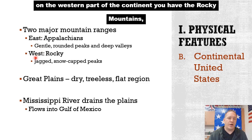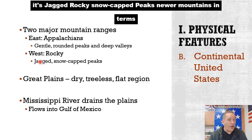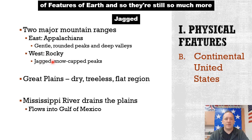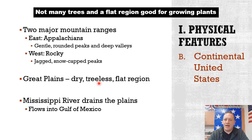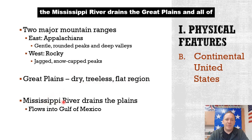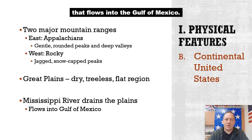On the western part of the continent you have the Rocky Mountains — jagged, rocky, snow-capped peaks. These are newer mountains in terms of Earth's features, so they're still much more jagged. Between the two mountain ranges you find the Great Plains, which is pretty dry, not many trees, a flat region good for growing plants. The Mississippi River drains the Great Plains, and all of that flows into the Gulf of Mexico.